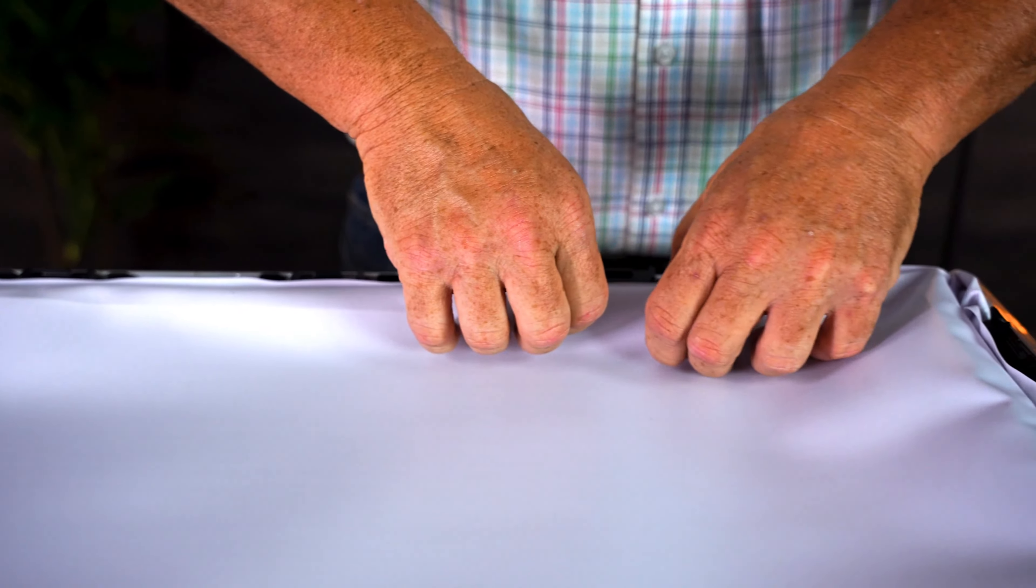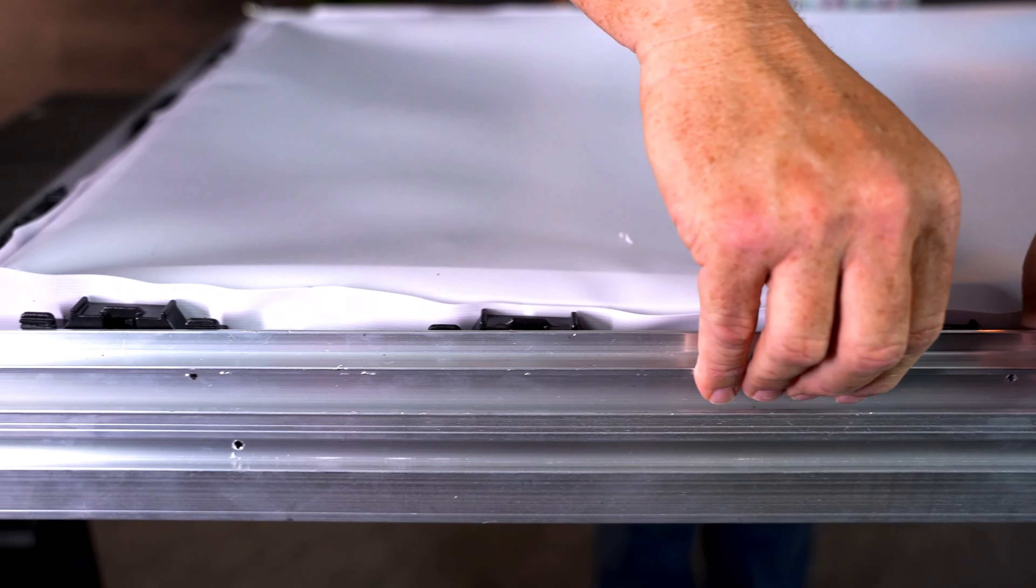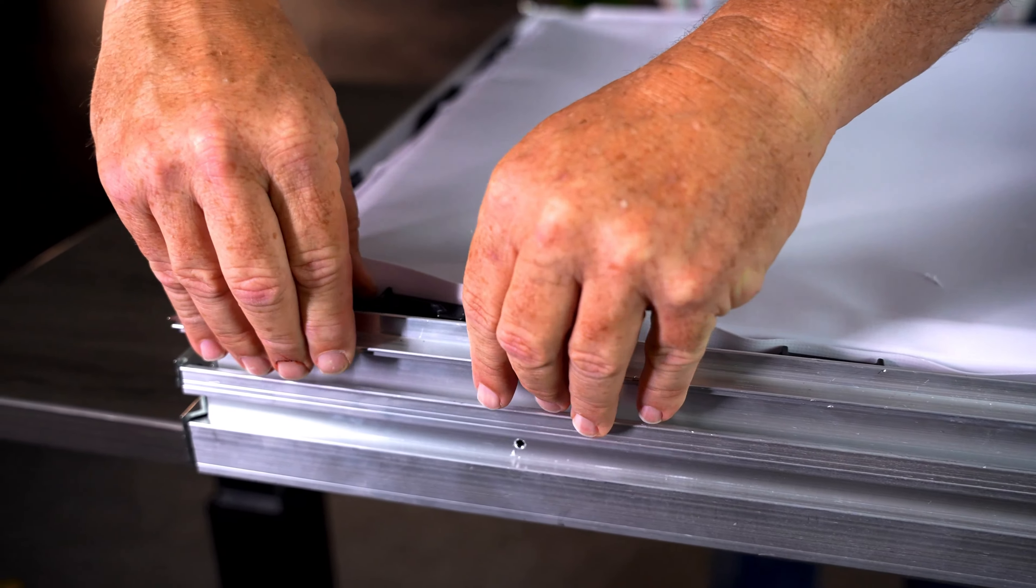Once again, we're going to space that out every six inches. After we get all our clips on our flex face, we're going to lay our flex over the top of our frame, and then we're going to take each one of these clips and press it down finger tight into the ridge. These clips will lock into a ridge that is inside the frame right here. We'll press down. You want to hear it click.